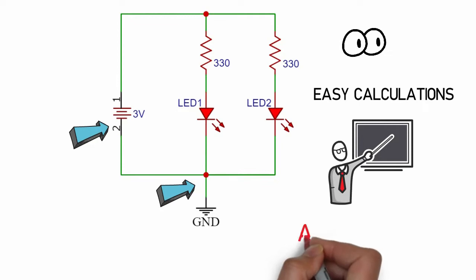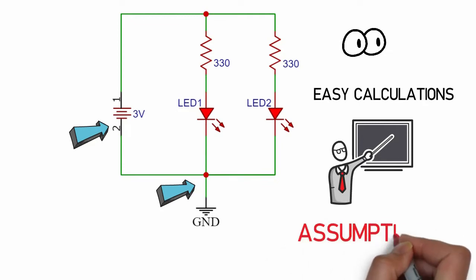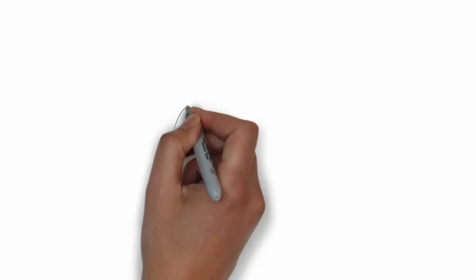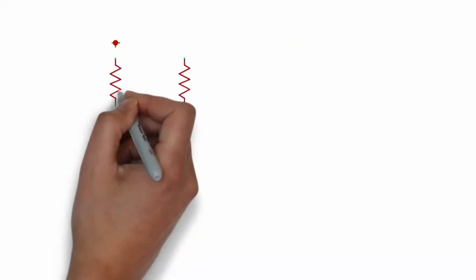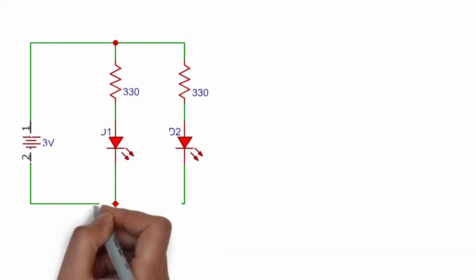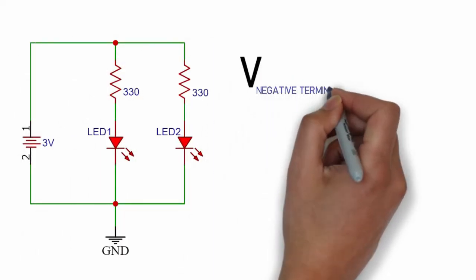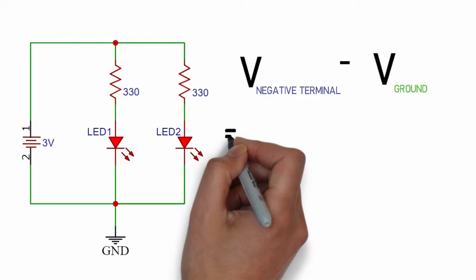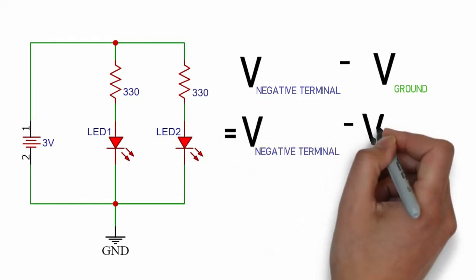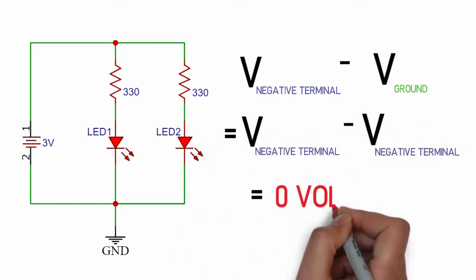So what actually happens here is that the negative terminal of the power source is being assumed as our ground. Now what is this zero volt thing that we saw in the definition of ground? Actually this zero volt is a potential difference between negative terminal and our reference point ground which as you can see is negative terminal itself. This is how ground terminal is said to have zero volts.